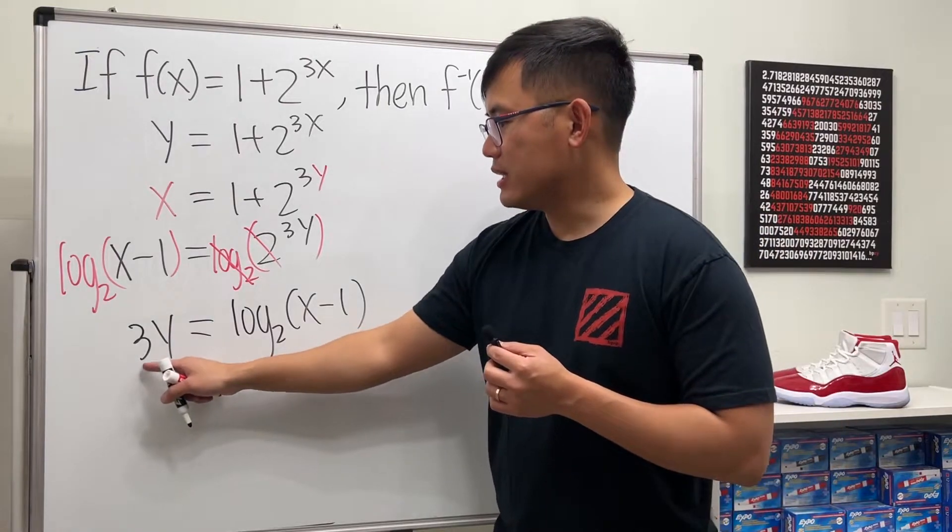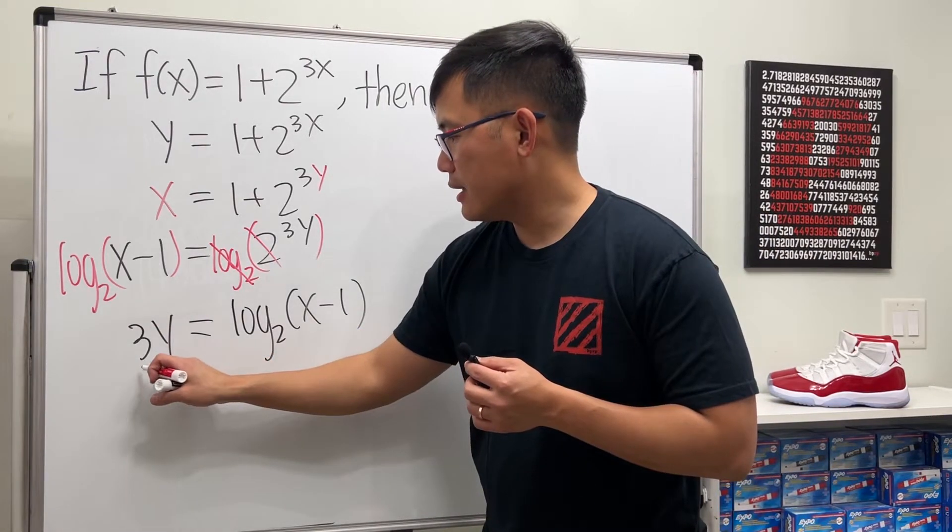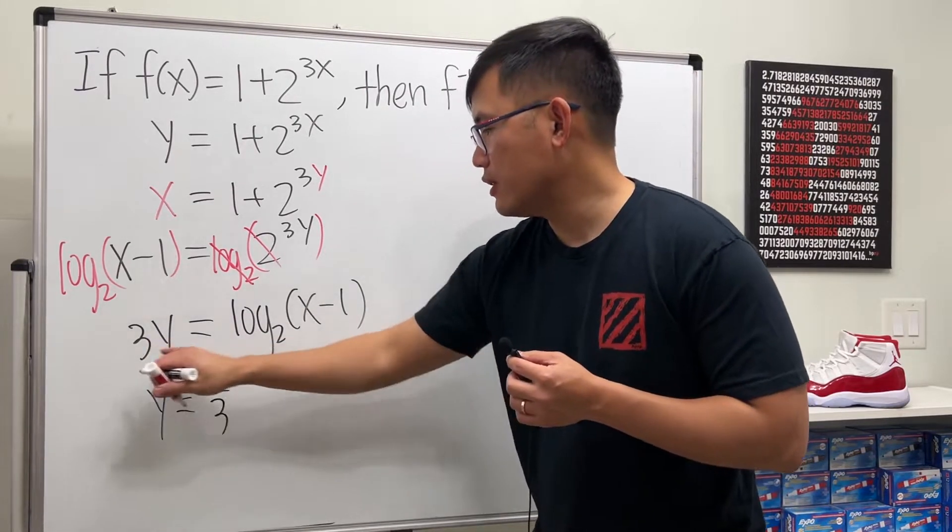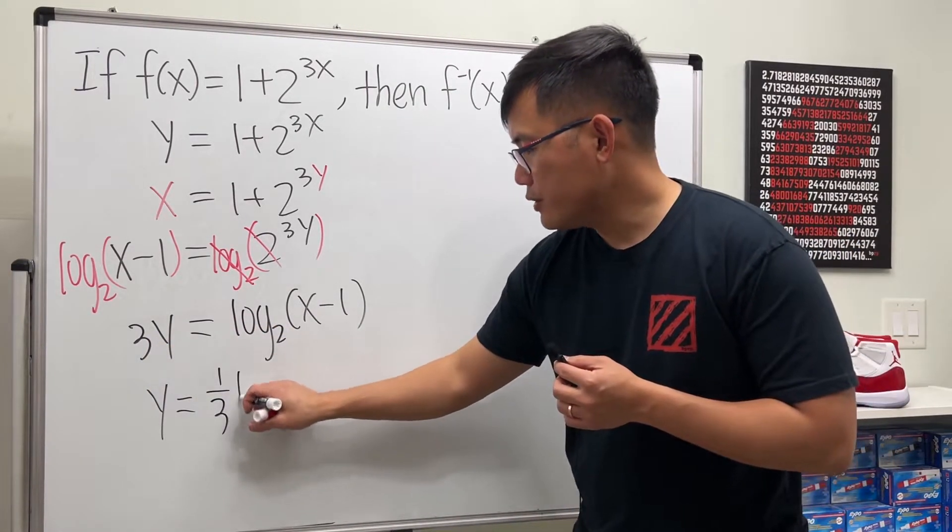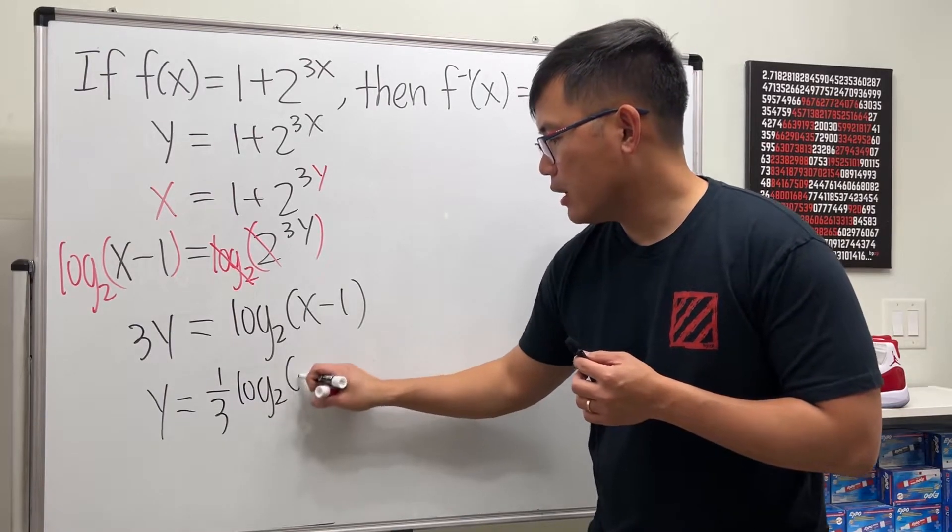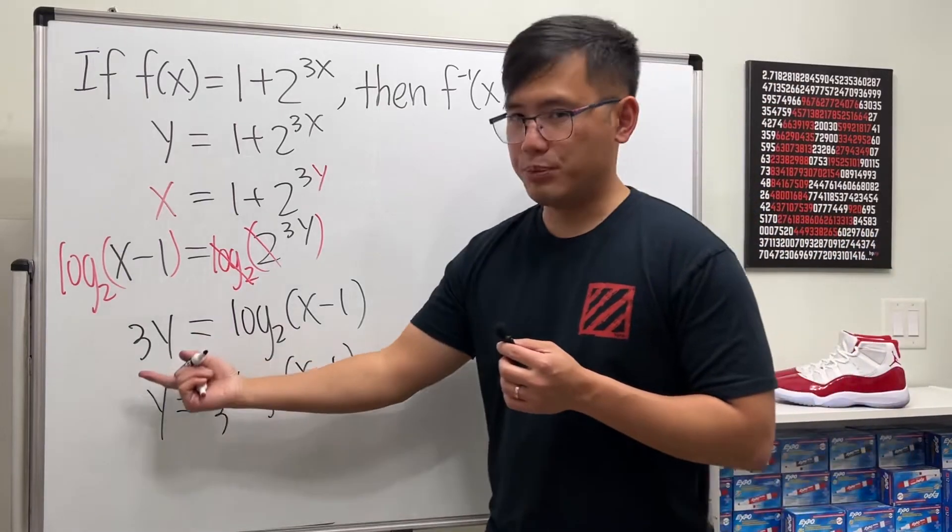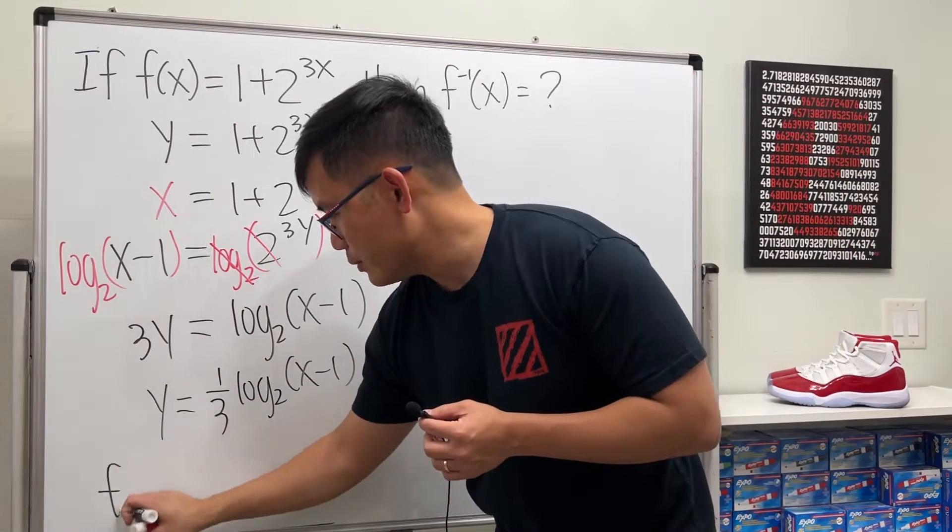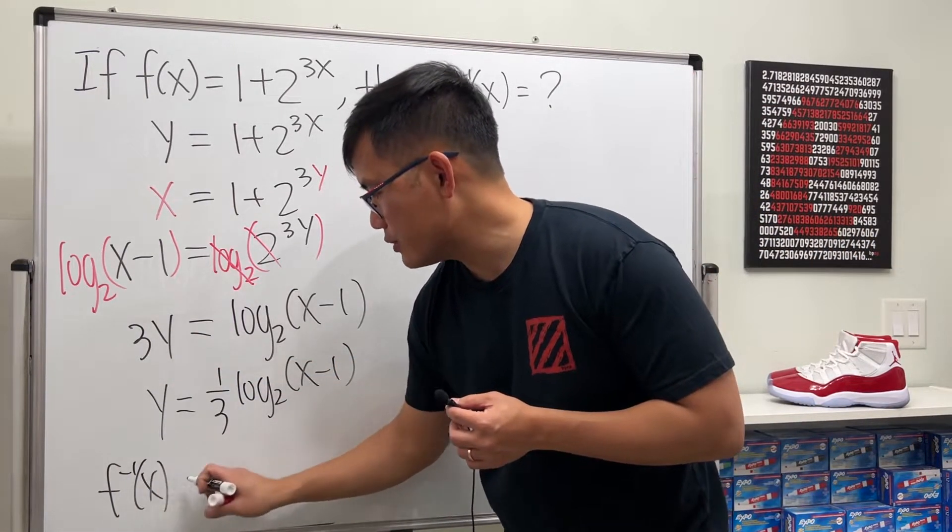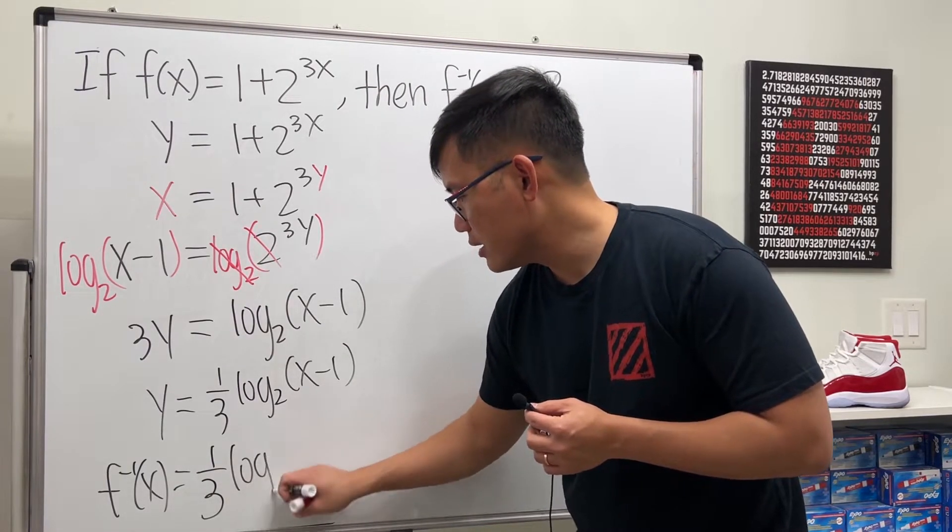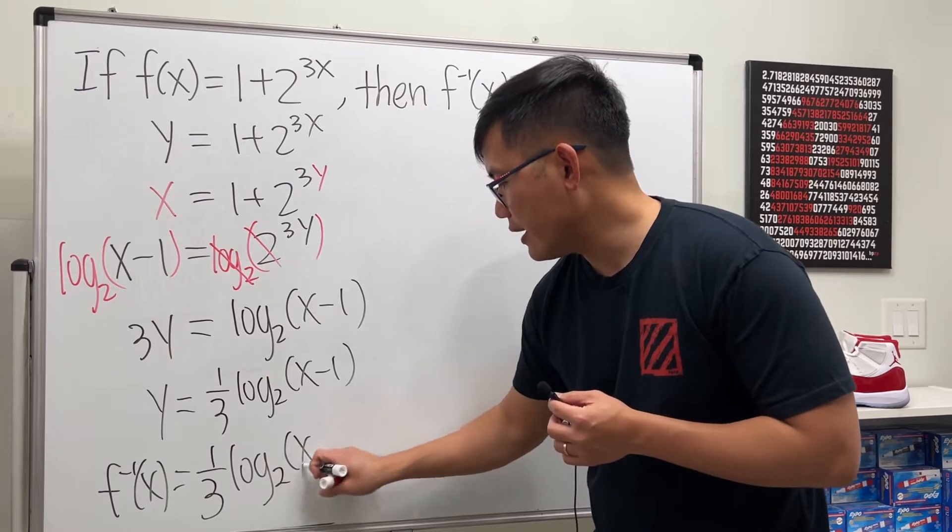Finally we can divide the 3 on both sides. This means y equals, let's put a 1 over 3 right here, so 1 over 3 log base 2 of x minus 1. And this is pretty much our answer. Let me write this as f inverse notation, and we have 1 over 3 times log base 2 of x minus 1.